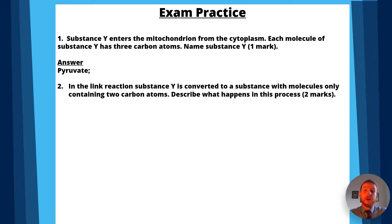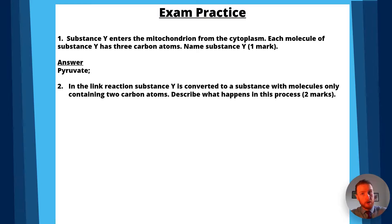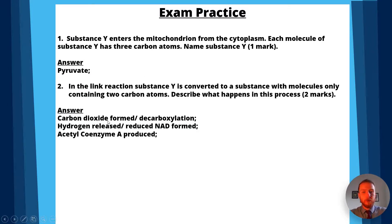Question two: in the link reaction, substance Y is converted to a substance with molecules containing only two carbon atoms. Describe what happens in this process — worth two marks. The answer: carbon dioxide is formed, or decarboxylation, for the first mark. Next, hydrogen is released, or reduced NAD is formed, for the second mark. For a bonus third mark you could have said acetyl coenzyme A is produced.